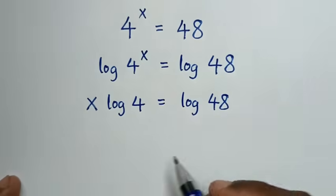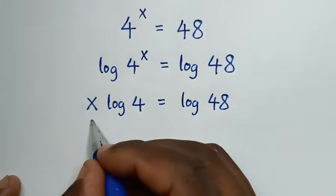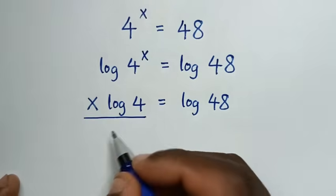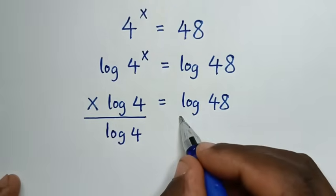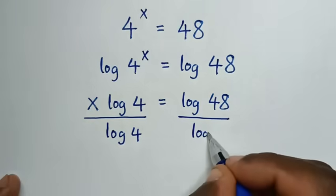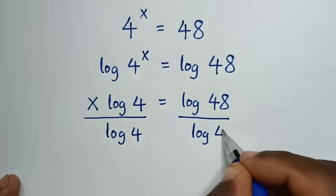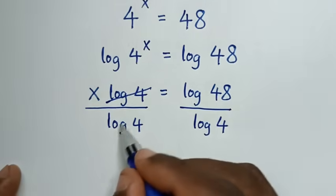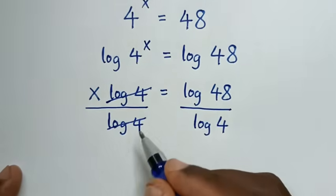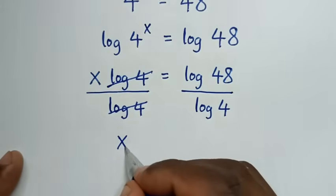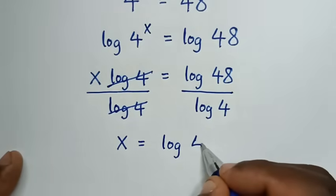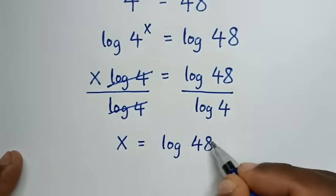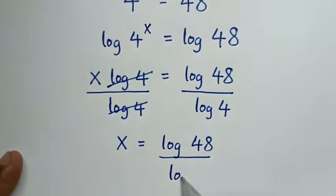Then we'll divide by log of 4 on both sides — over log of 4 here and over log of 4 here. So these will cancel, and it will be x is equal to log of 48 over log of 4.